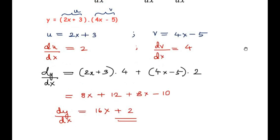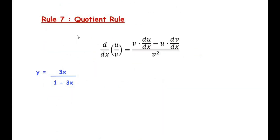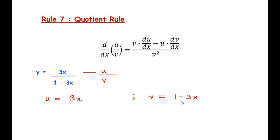Rule 7 is the quotient rule, used when there is division of terms. The formula is: d/dx of (u/v) = [v·(du/dx) − u·(dv/dx)] / v². For example, y = 3x/(1−3x). Since there is division, we use the quotient rule. Let u = 3x (numerator) and v = 1−3x (denominator).